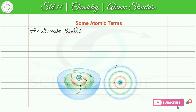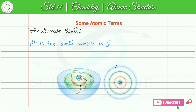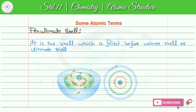Our next term is pen ultimate shell. जो shell valence shell से पहले fill होता है, that is pen ultimate shell. It is the shell which is filled before valence shell or ultimate shell. मतलब जो shell valence shell या ultimate shell से पहले fill हो जाता है, that is pen ultimate shell.